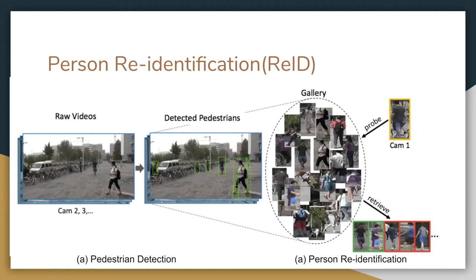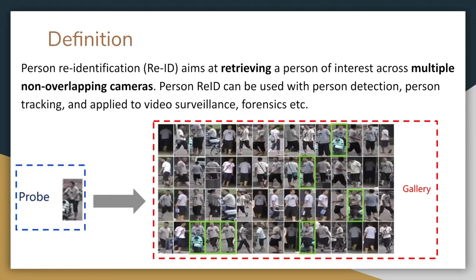Person re-identification usually depends on clothes, figure, and accessories. The hard part is to find the same person in another camera, because we have already lost sight of the person. It is used for short-term forensic, because if the suspect changes clothes, it can hardly identify the same person.